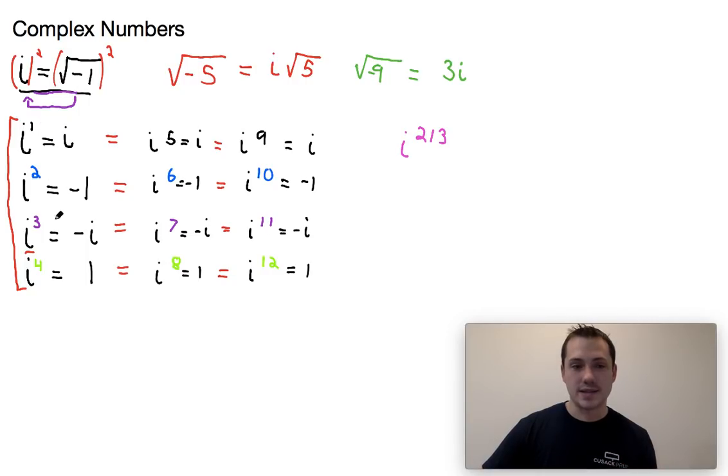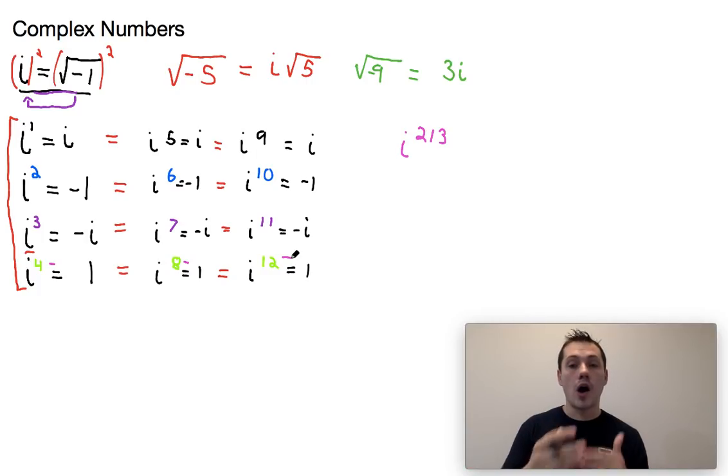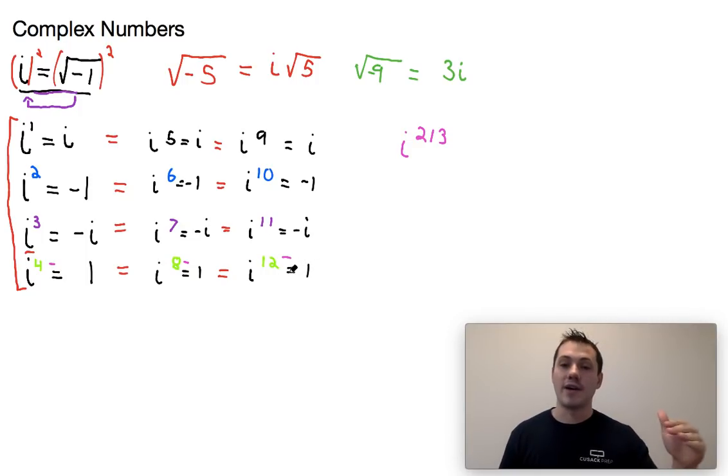So what we can notice about this is every multiple of four has the same value. i to the fourth is the same as i to the eighth is the same as i to the twelfth. All of those values are multiples of four and they're going to have the same number. So essentially that means that this sequence resets any time we hit a multiple of four. So if I get to say i to the 400, I know that that would be just equal to one. Now if I move one past that to i to the 401, it would just be the same as this whole first row of numbers right here and it would just equal i. Two numbers past it, i squared negative one. Three numbers past it, i cubed negative i. So the easiest way to handle this, because you probably don't have all the multiples of four memorized in your head up to infinity, would just be to take whatever this exponent is and divide it by four.